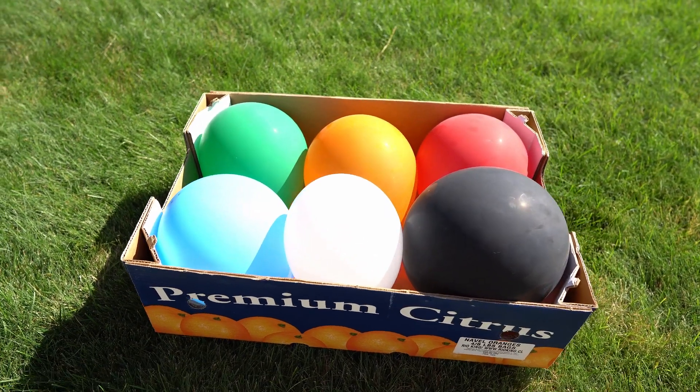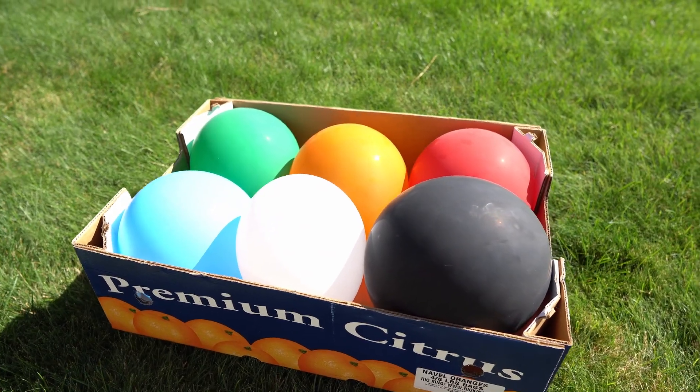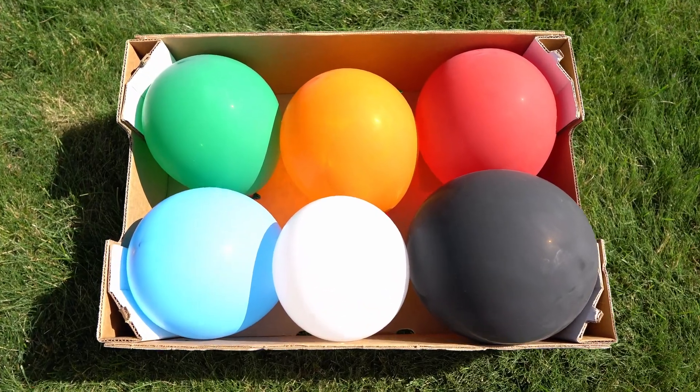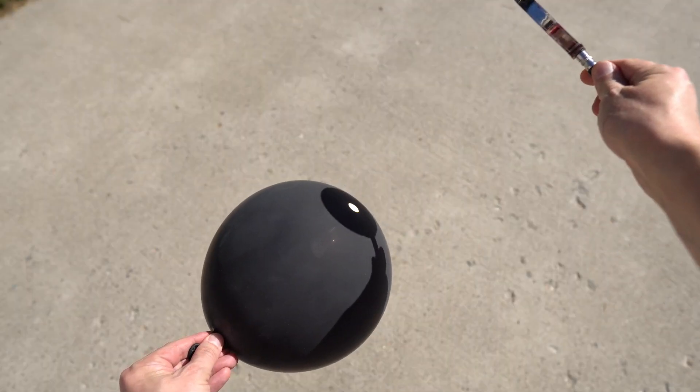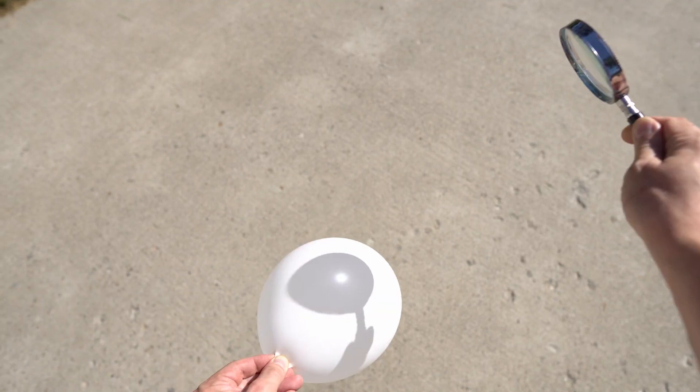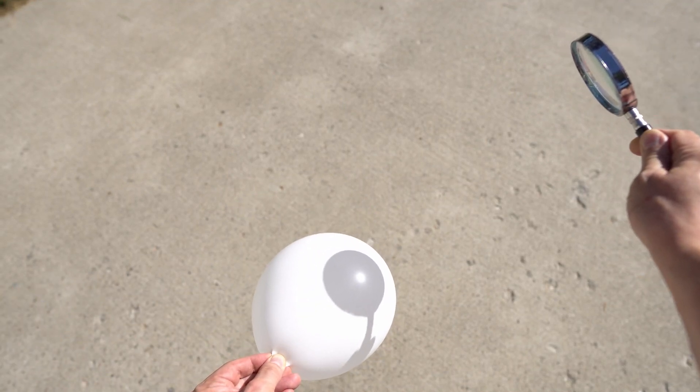So what exactly is going on? Why did all the other balloons except the white one pop? Well, this happens because the light cannot go through other color balloons, but it easily goes through the white balloon. And that's why the white balloon is impossible to pop this way.